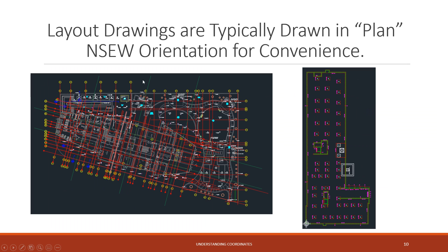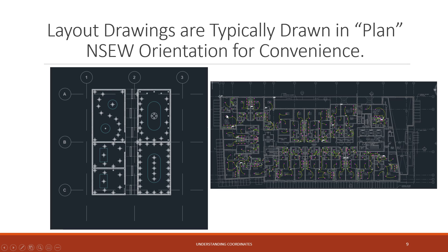Here you have another example in north, south, east, west plan view. This one's a little more intricate because it has a diagonal grid within it, but still maintains that north, south, east, west plan view. And here's a concrete job for foundations as well — again in north, south, east, west plan view. These are obviously not oriented in true map north, south, east, west coordinates.